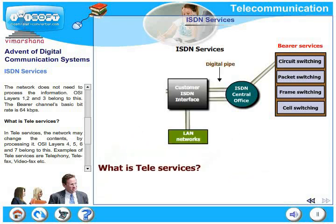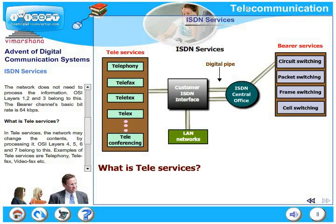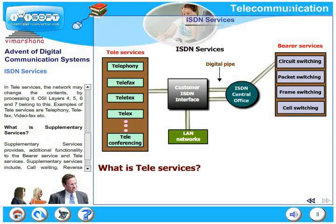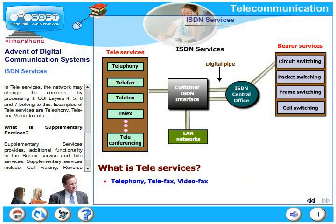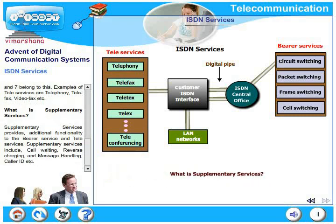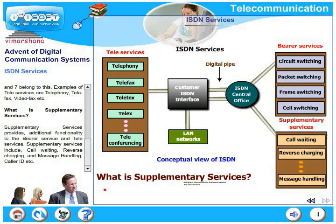In teleservices, the network may change the contents by processing them. OSI layers 4, 5, 6, and 7 belong to teleservices, where transformation of contents takes place — for example, error bits are added. Examples of teleservices are telephony, telefax, and videofax. Supplementary services provide additional functionality to bearer services and teleservices. Supplementary services include call waiting, reverse charging, message handling, and caller ID.